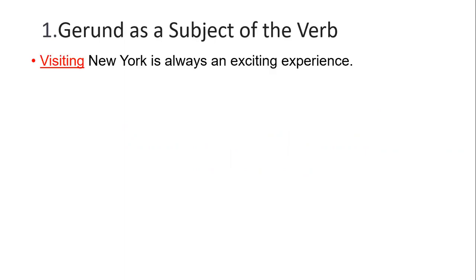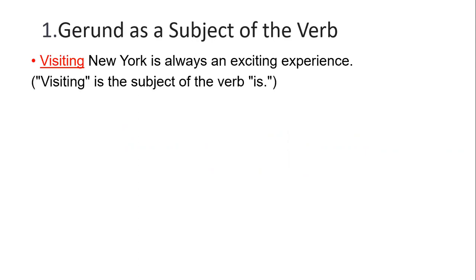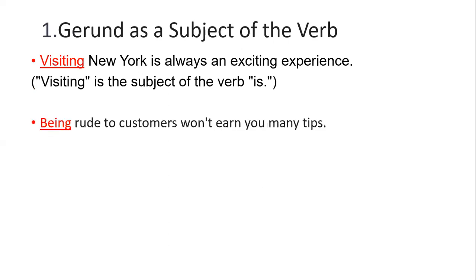First, gerund as a subject of the verb. Example: 'Visiting New York is always an exciting experience.' Here, visiting is the subject of the verb and New York is its complement. 'Being rude to customers won't earn you many tips' — here 'being' is used as the subject of the verb. 'Running is a good way to explore' — running is used as the subject of the verb. You can see its position; the subject position has been occupied here.